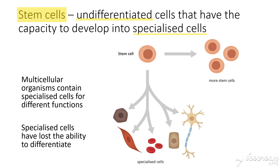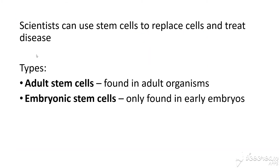Once cells have become specialised, those specialised cells have lost the ability to differentiate. They cannot act like stem cells and become other types of cells — that doesn't happen. Other stem cells have to perform that role.